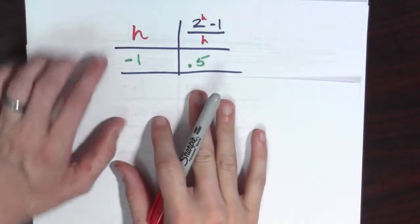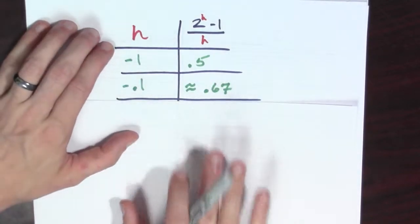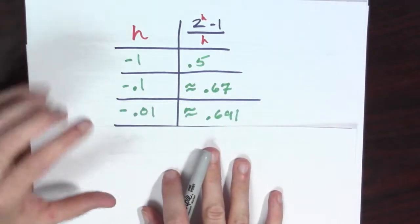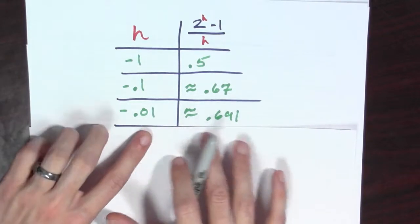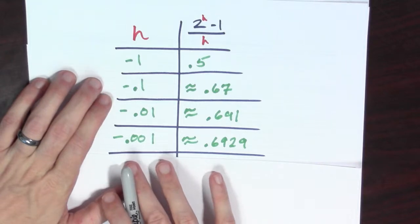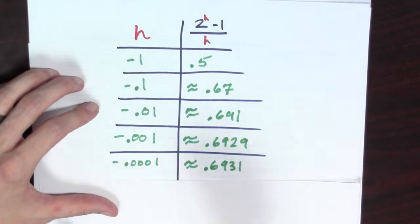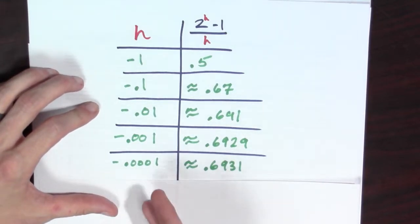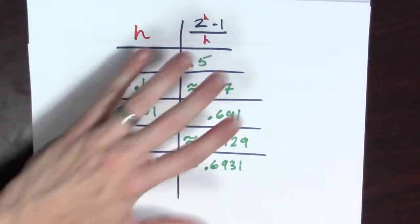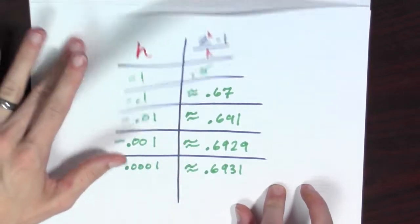We plug in minus 1 and get out 0.5. Then minus 0.1 gives about 0.67. Minus 0.01 gives about 0.691. Minus 0.001 gives about 0.6929. And minus 0.0001 gives about 0.6931. That's our table representing the limit from the left. Now let's investigate the limit from the right.